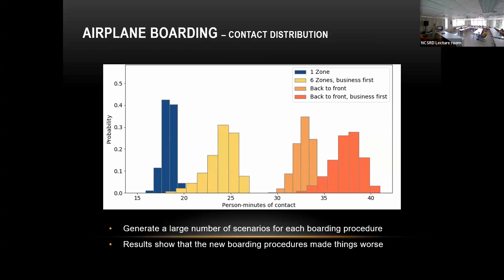During the COVID epidemic, airlines brought in back-to-front boarding, where people at the back board first, then middle, then front. The result shows the number of contacts — measured in person-minutes of contact — actually increased because of the policy they used. If you use random boarding, you would actually get fewer person-minutes of contact between people.